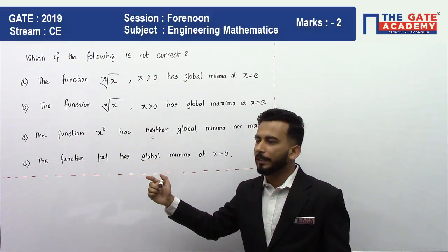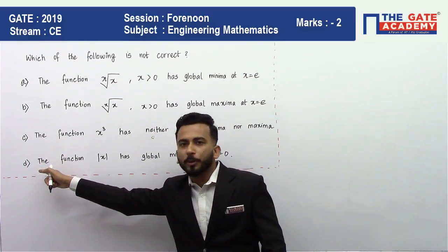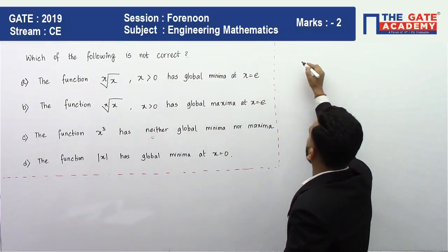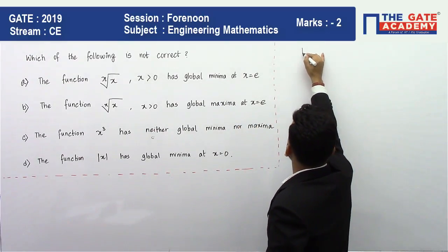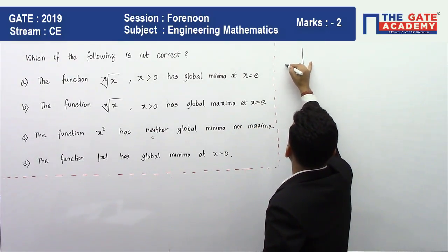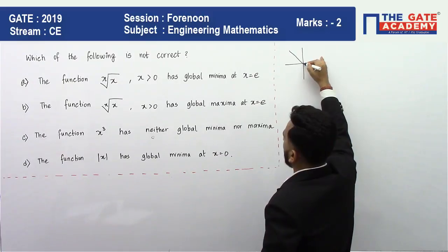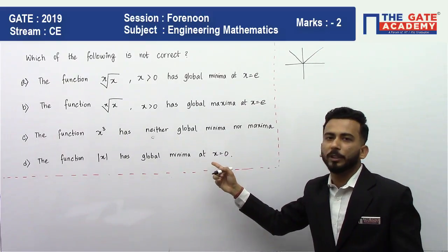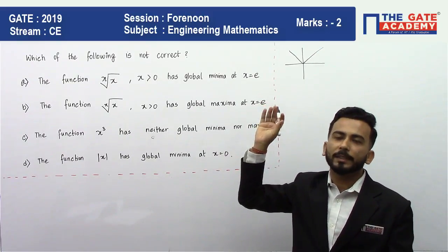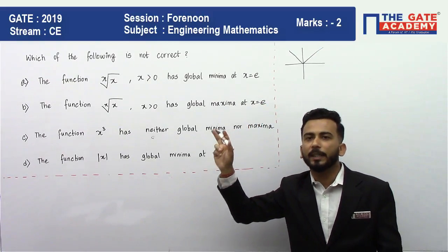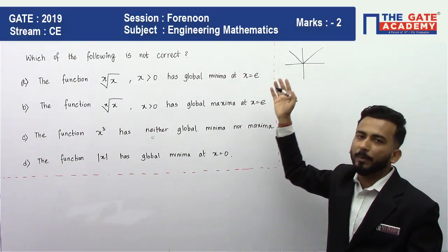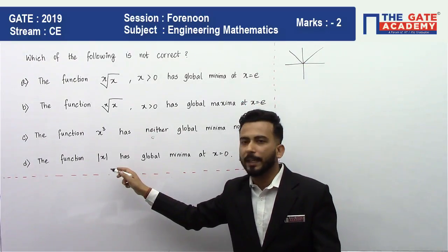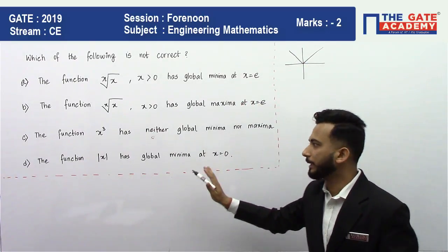Looking at option D: the function |x| has global minima at x = 0. As you can see from the graph, |x| does have a minima at x = 0, so this statement is correct.